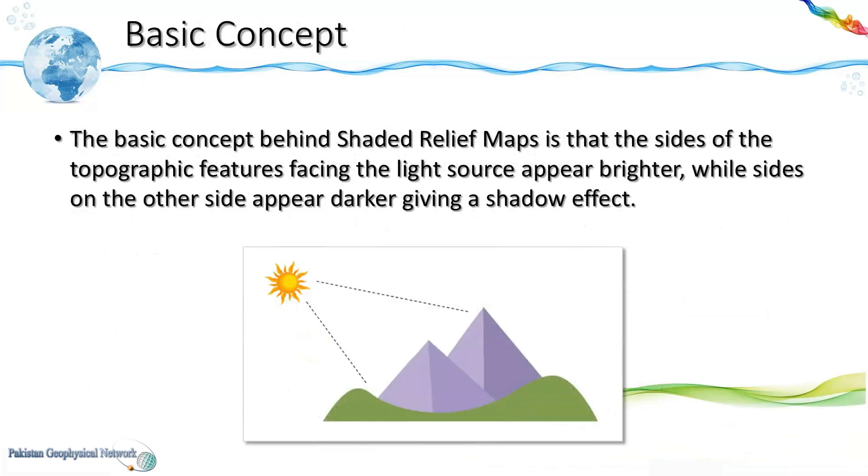The basic concept behind shaded relief maps is that the sides of the topographic features facing the light source appear brighter while the sides on the other side appear darker giving a shadow effect.